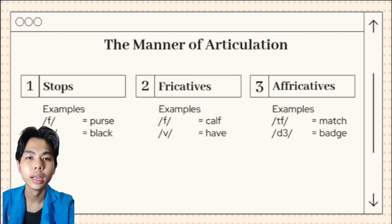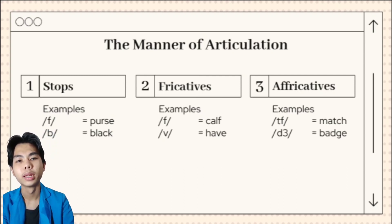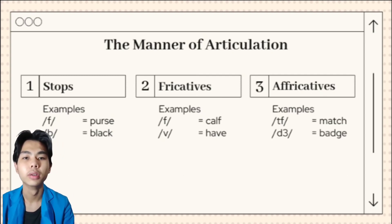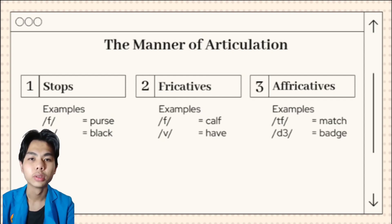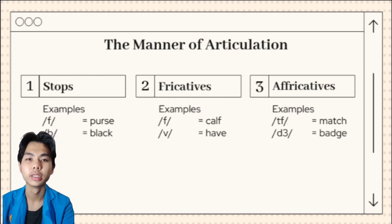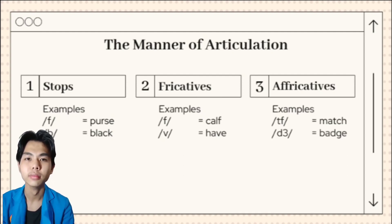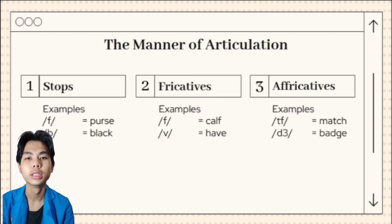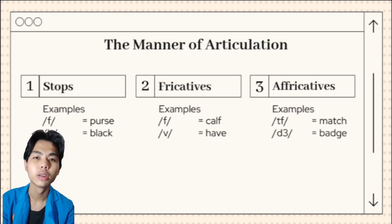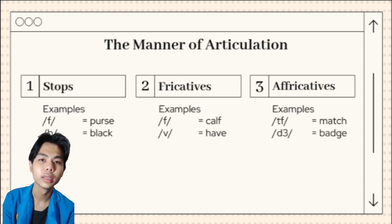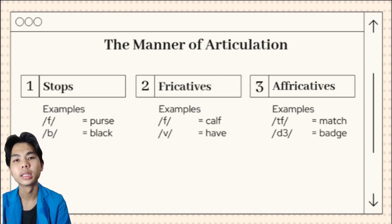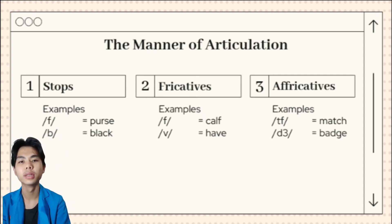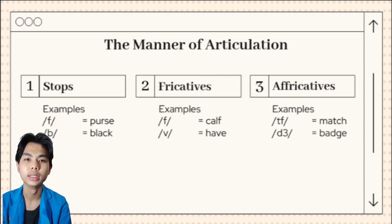Next is affricate. Affricate is the combination of stop and fricative. If you combine a brief stopping of the airstream with an abrupt release which causes some friction, you will be able to produce the sounds T-ch and D-j. These are called affricates and occur at the beginning of the words 'chip' and 'jip.' In the first, there is a voiceless affricate T-ch, and in the second, a voiced affricate J. Example: T-ch is in 'match' and J is in 'batch.'